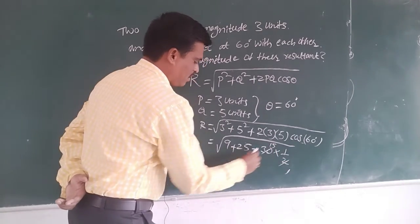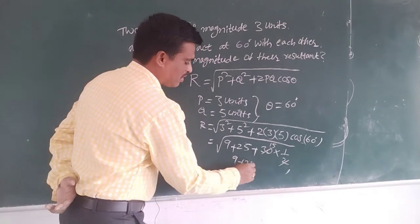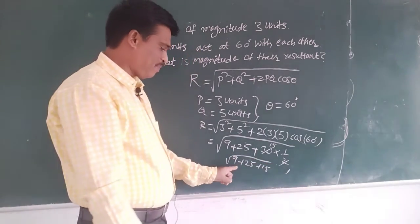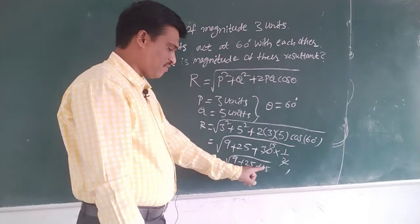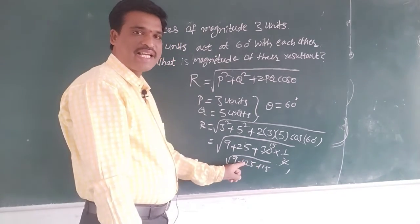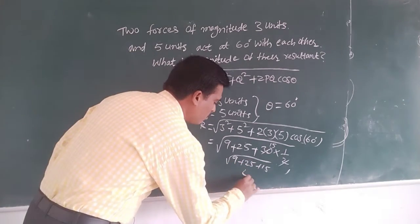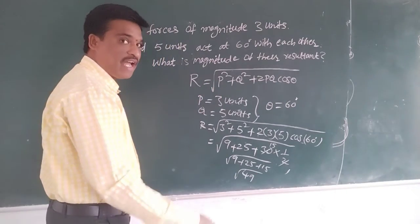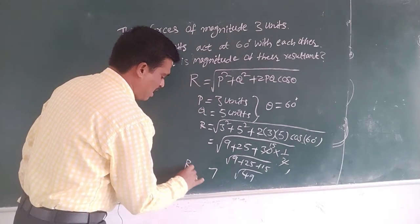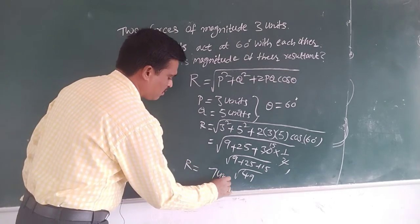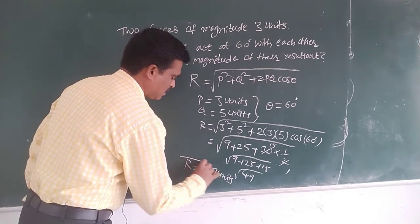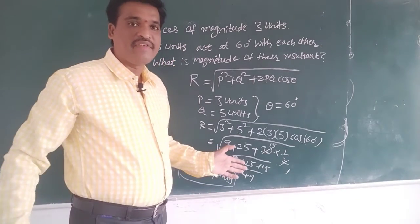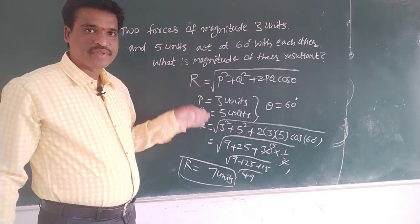Now take under root. 30 times 1/2 is 15. So 9 plus 25 plus 15 is how much? 9 plus 25 is 34, plus 15 is 49. What is the root of 49? 7 units. This is the resultant vector of your problem. Is it clear?